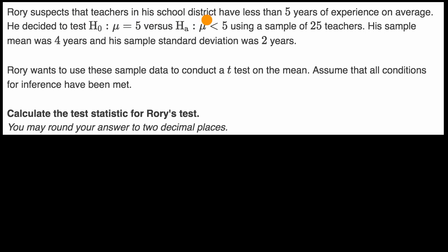Rory suspects that teachers in his school district have less than five years of experience on average. He decides to test his null hypothesis that the mean number of years of experience is five years, and his alternative hypothesis is that the true mean years of experience is less than five years, using a sample of 25 teachers. His sample mean was four years, and his sample standard deviation was two years. Rory wants to use these sample data to conduct a t-test on the mean. Assume that all conditions for inference have been met. Calculate the test statistic for Rory's test.